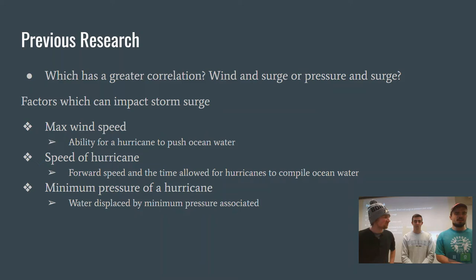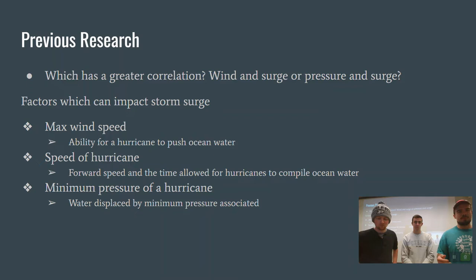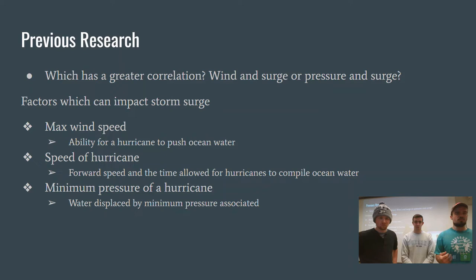Some of the previous research conducted on this topic was basically determining what part of a hurricane has the greatest impact on storm surge. What we were looking for was which has a greater correlation: wind and surge, or pressure and surge. Factors that can impact storm surge include max wind speed — basically the ability for a hurricane to push ocean water — the speed of a hurricane, and the minimum pressure of a hurricane. Water displaced by minimum pressure can also be associated with enhancing storm surge potential.